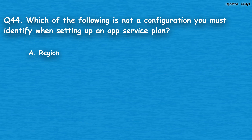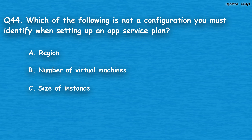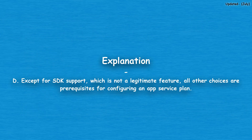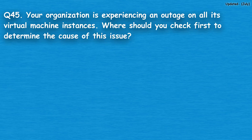Question number 44: Which of the following is not a configuration you must identify when setting up an app service plan? Option A: region, option B: number of virtual machines, option C: size of instance, option D: SDK support. The correct answer is option D, SDK support. Except for SDK support, which is not a legitimate feature, all other choices are prerequisites for configuring an app service plan.